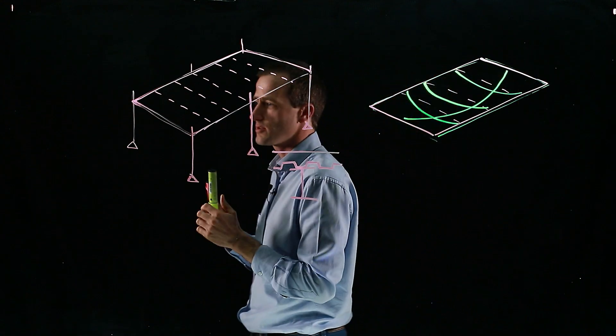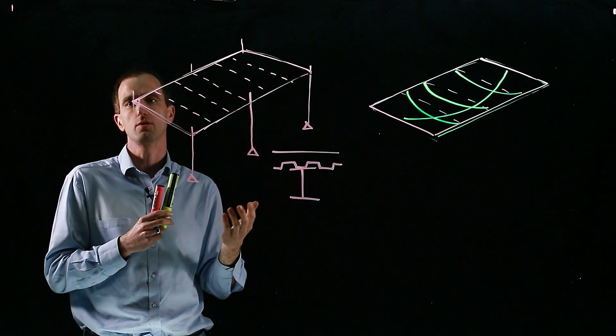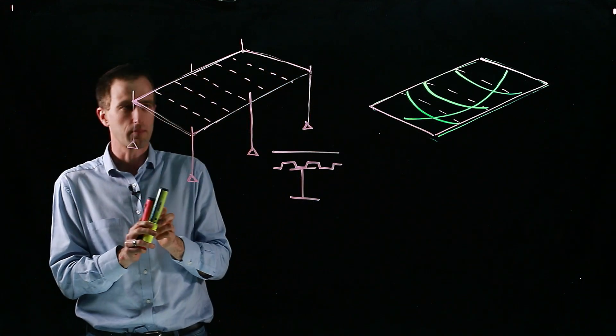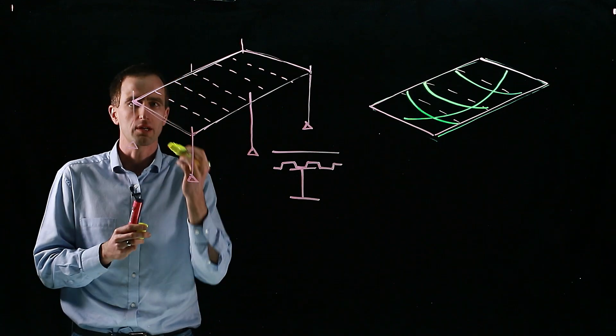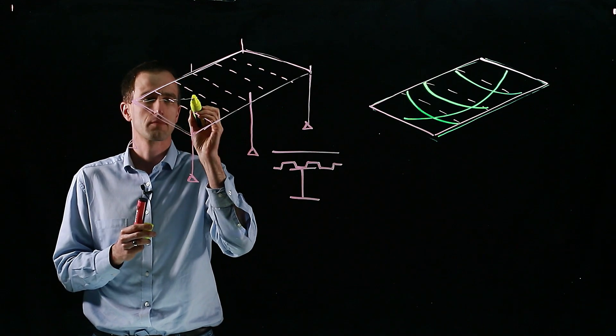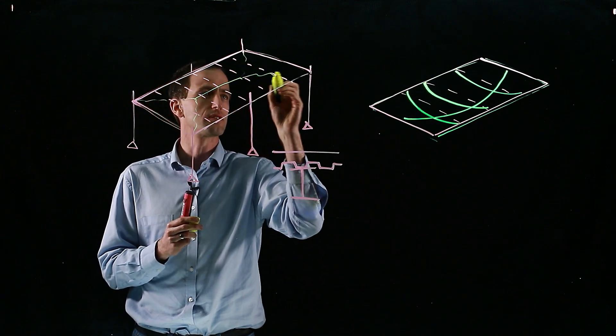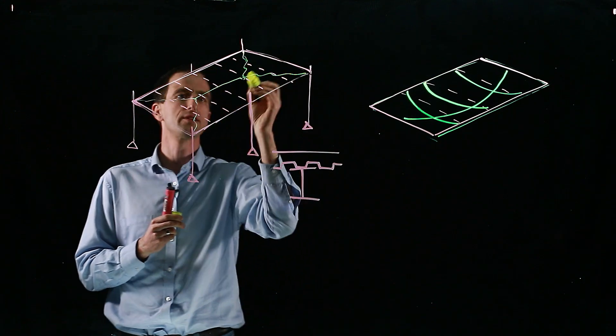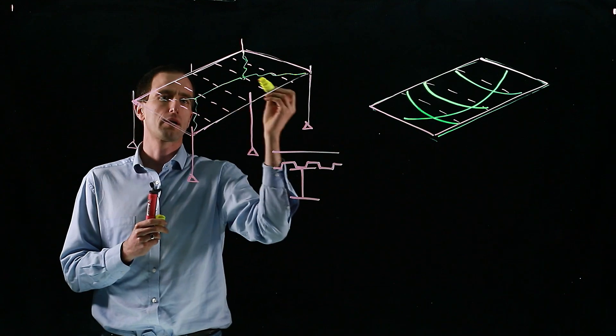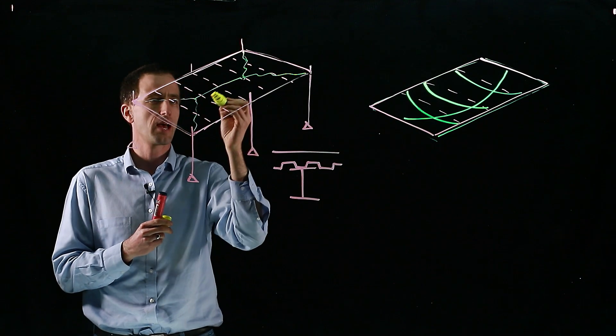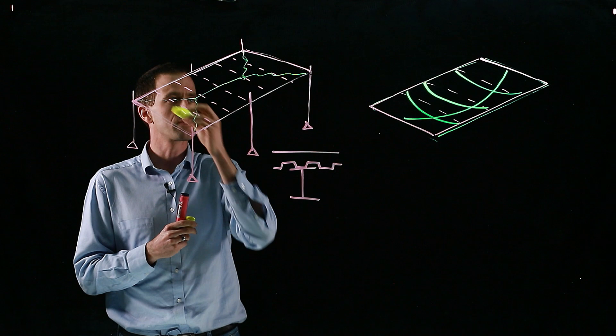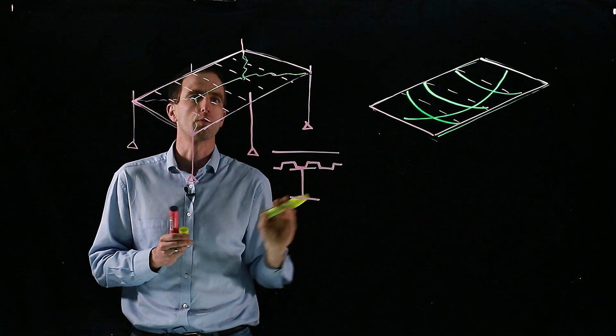That gives us a useful design method similar to concrete design where we design slabs using plastic analysis. We can use a crack pattern and design it for the slab to actually fail along those lines. Then we just need to work out the plastic capacity of our slab and our beams. There are various procedures that go into this, which we won't go into now.